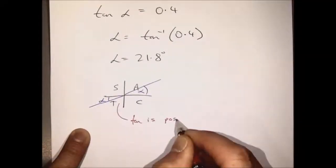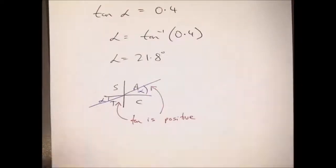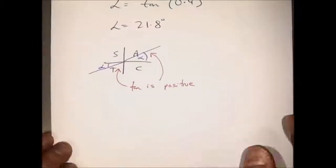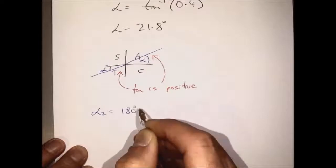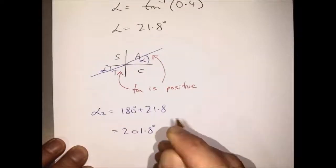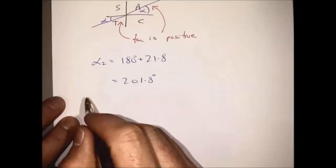So we're going to have two values for alpha, alpha being 21.8 degrees. So our second value will be 180 plus 21.8 degrees, and that's 201.8 degrees.